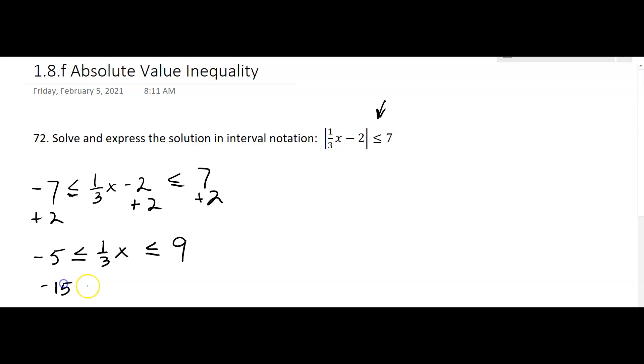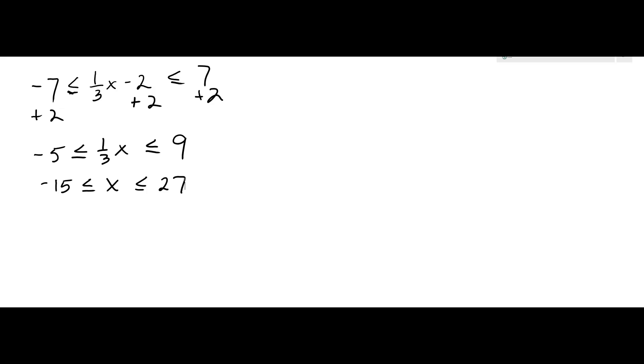Okay, so that's the inequality notation. In interval notation, it would be a square bracket negative 15, comma, 27, square bracket.